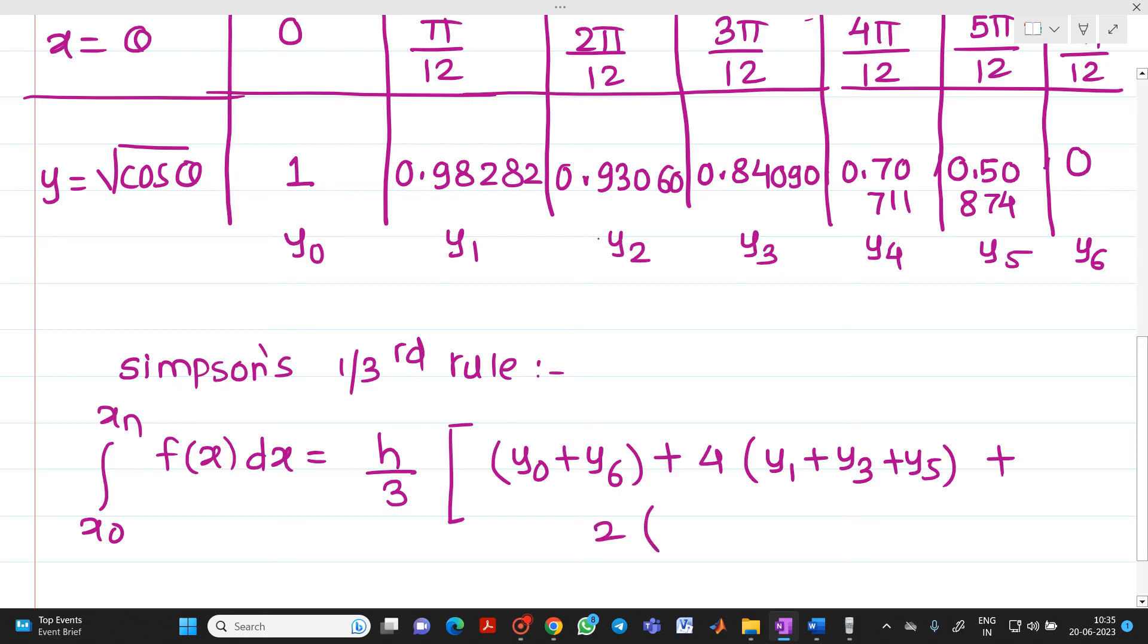plus 2 times sum of remaining even ordinates of y, which will be y₂ plus y₄. So you just substitute all the values. You know h is π/12, then you know values from y₀ to y₆.